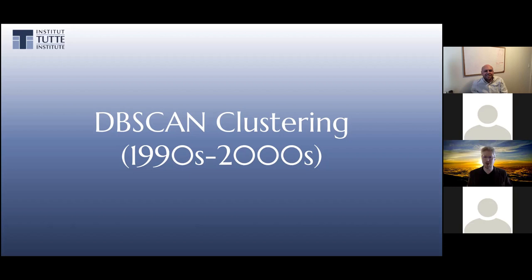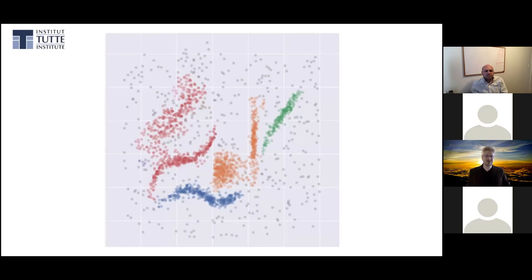Which brings us forward to the nineties — we've replaced our bell bottoms with acid wash jeans. Now we're going to tackle the problem of background noise and data partitioning with a little clustering algorithm called DBSCAN. Here are the results of the best DBSCAN run I could create on test data. You'll notice some of the points are gray — those are the points that haven't been assigned to a cluster.